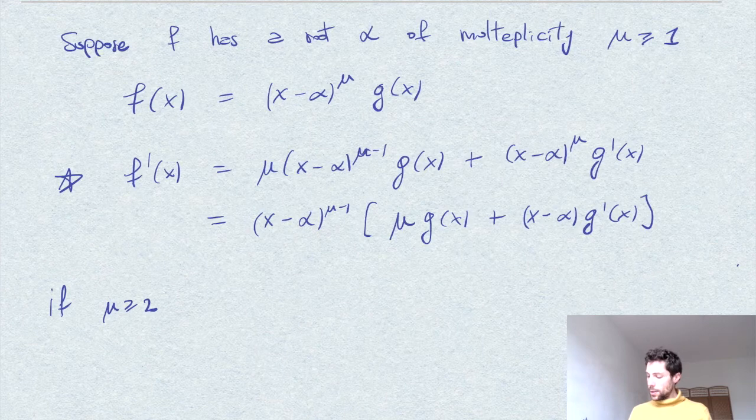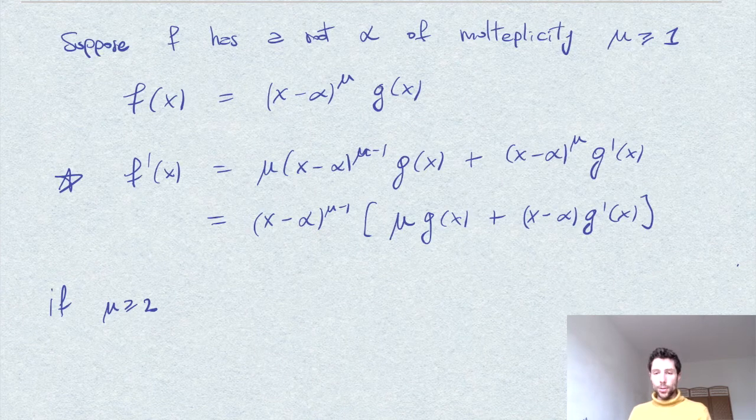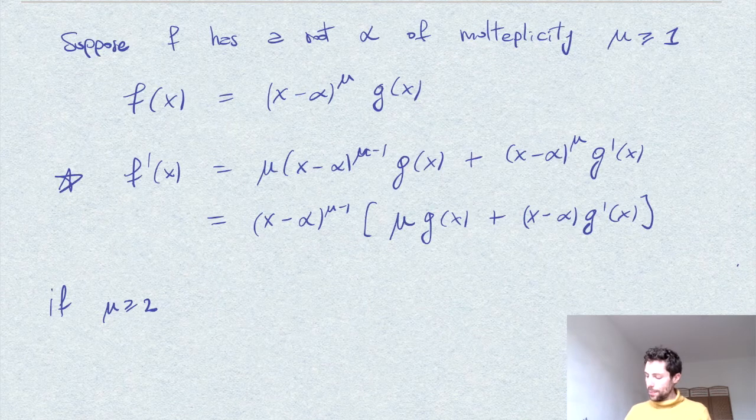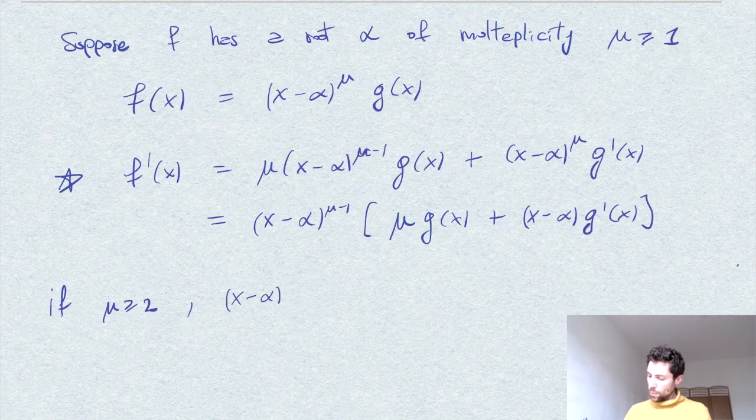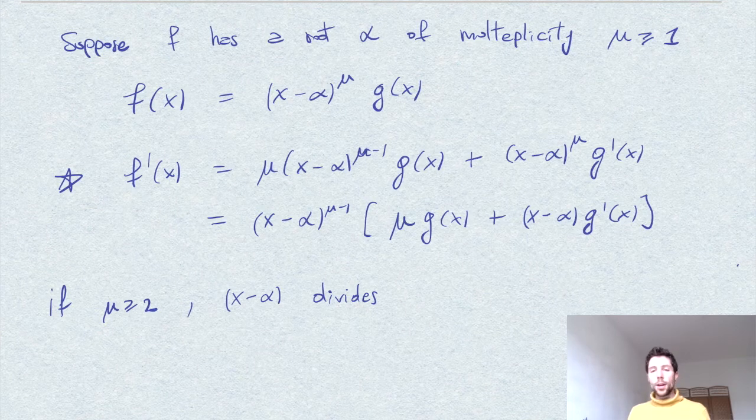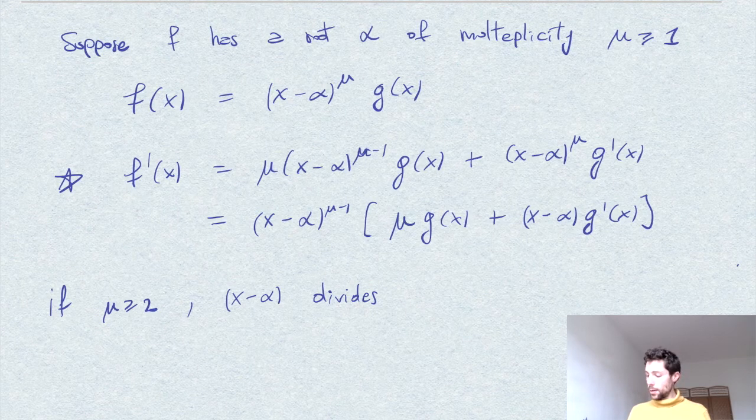then by this expression, we see that x minus alpha. The polynomial x minus alpha divides f prime because the exponent mu minus one is at least one.